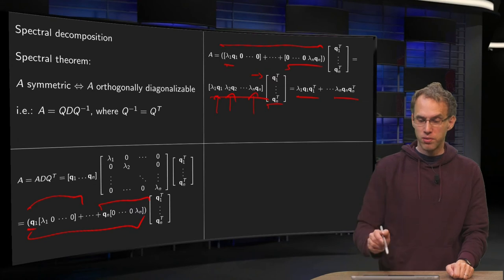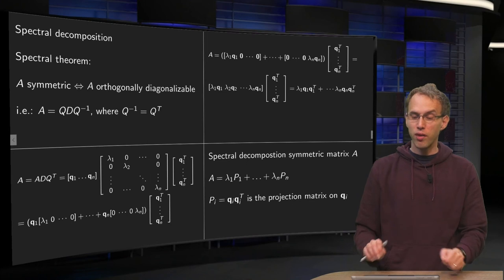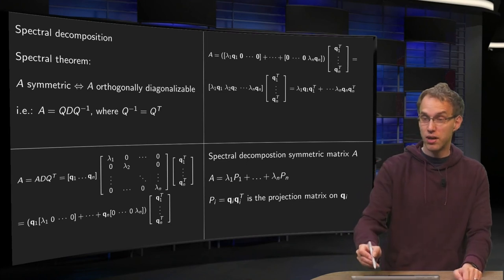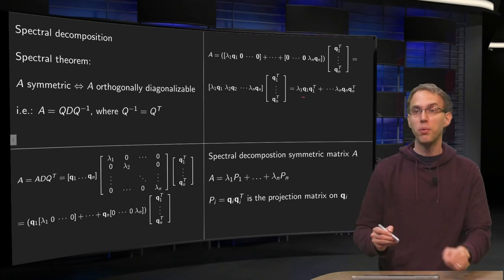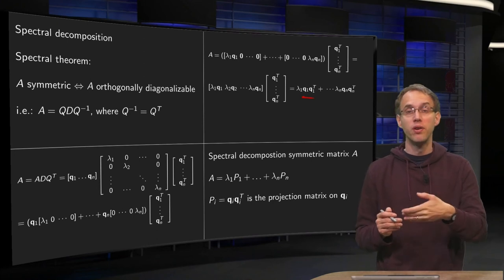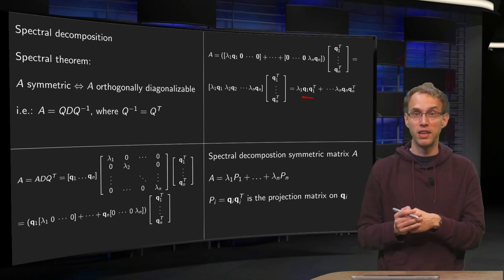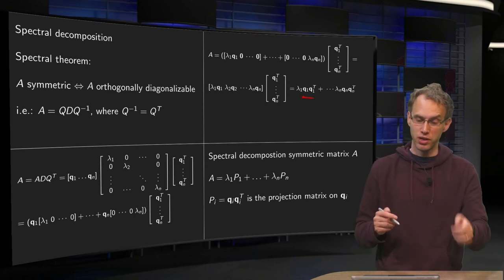However you recognize these, hopefully. Because Q1 times Q1 transpose is the projection matrix P1 on Q1. And Q2 times Q2 transpose is a projection matrix on the second eigenvector and so on and so on.